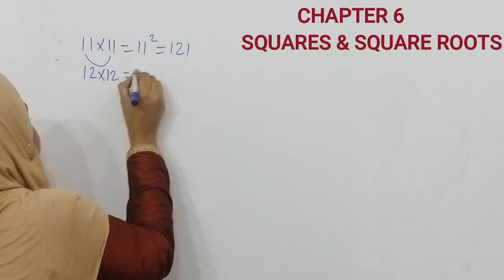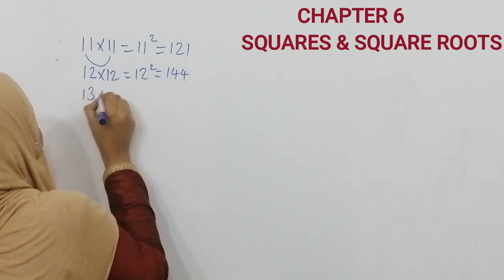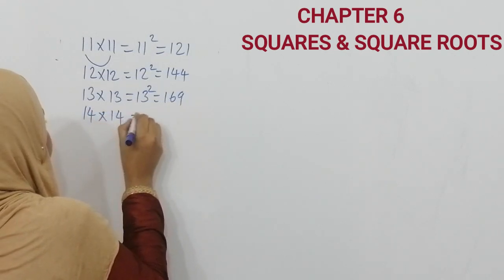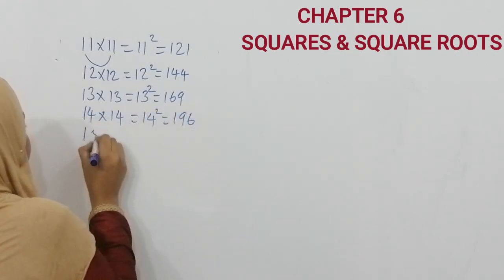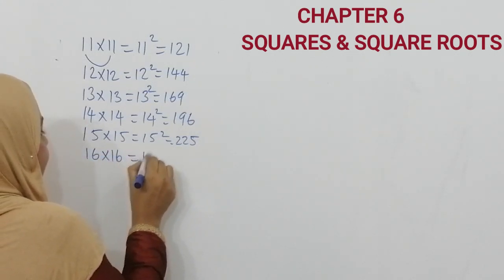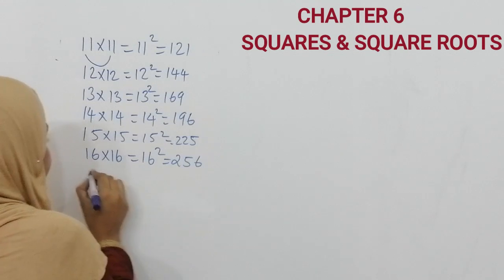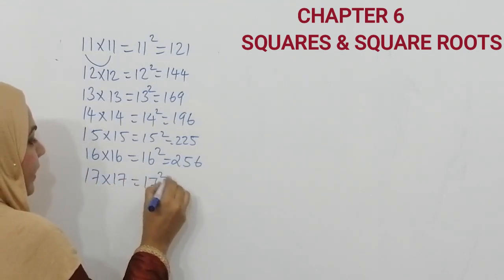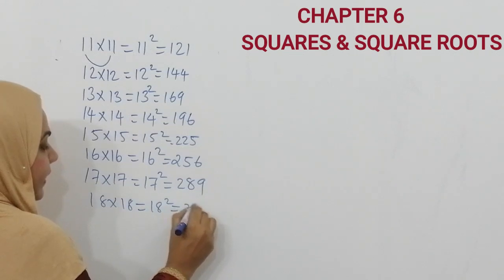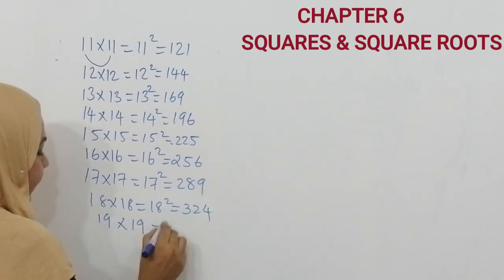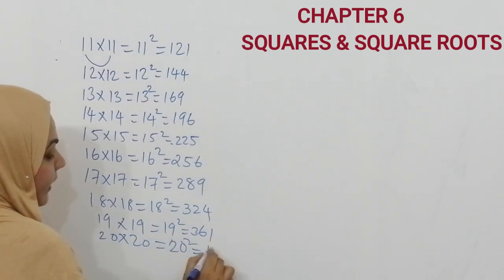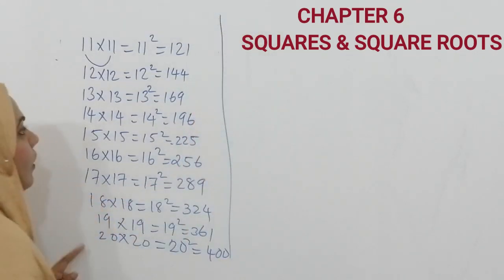12 into 12, 12 squared, that is 144. 13 into 13, that is 13 squared, 169. 14 into 14, that is 14 squared, that is 196. 15 into 15, that is 15 squared, 225. 18 into 18, that is 18 squared, you will get 324. 19 into 19, you will get 19 squared, that is 361. 20 into 20, you know that 20 squared is 400. So these are the square table of 11 to 20.